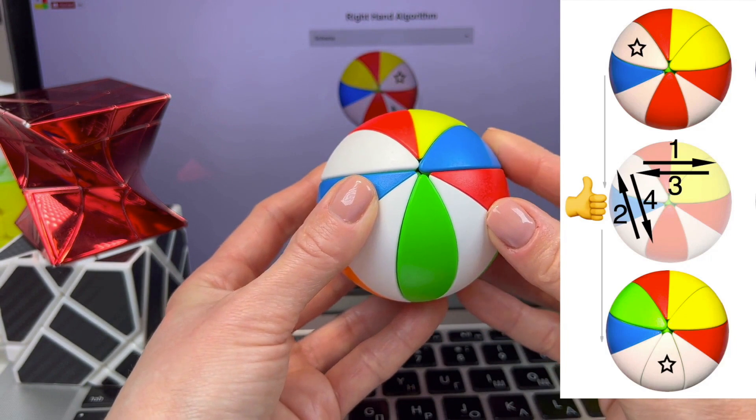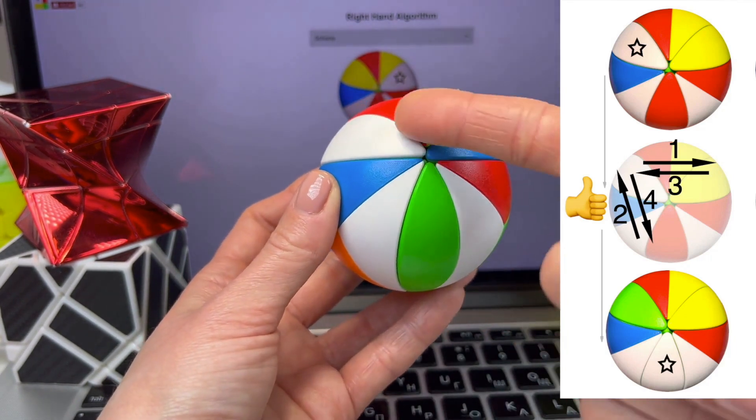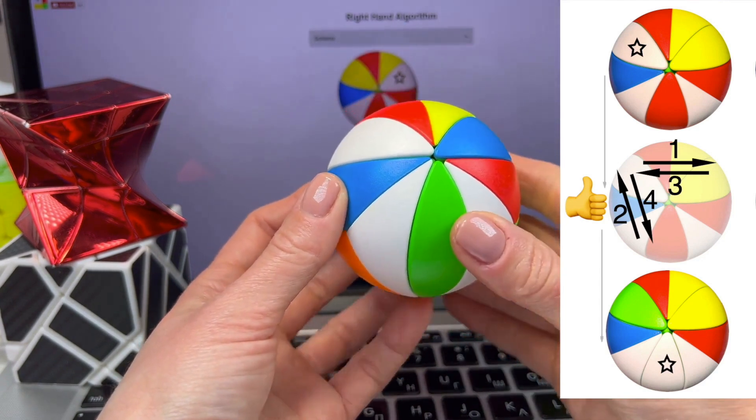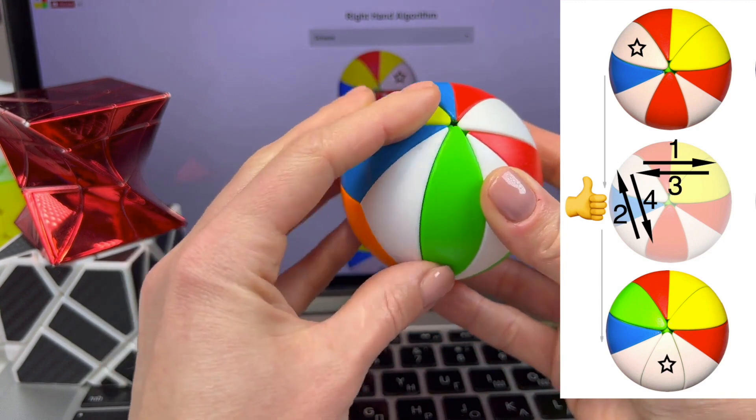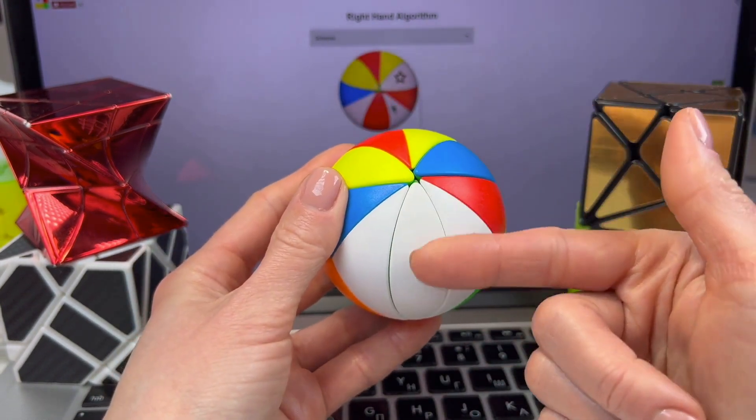Now, let's look at the situation where we need to use the left-hand algorithm. This white petal needs to be placed on the white side, but it's on the left. So, we need to use the left-hand algorithm. The petal is in place.